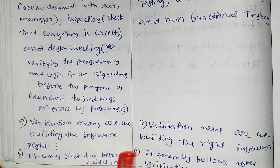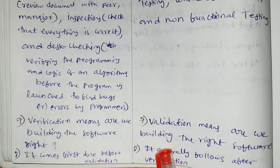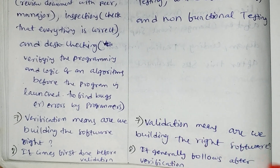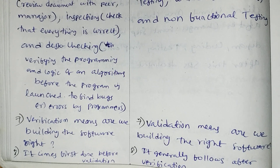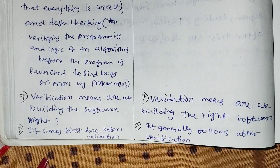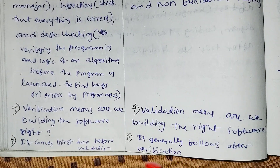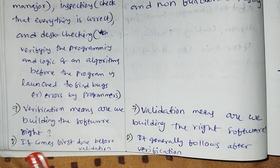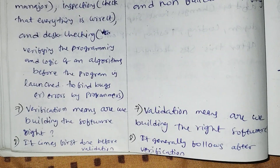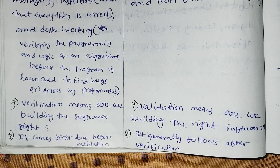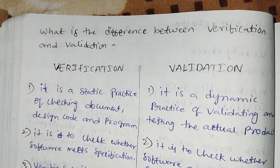Verification means: are we building the software right? Validation means: are we building the right software? Verification comes first, before validation; validation generally follows after verification. This is the difference between verification and validation. Please like and subscribe.